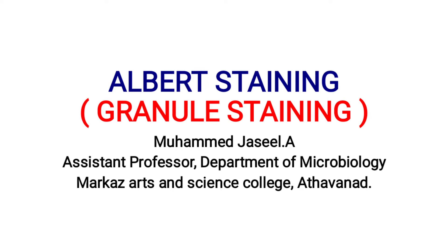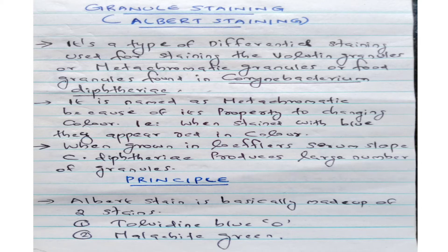I am Mohamad Jazeel, Assistant Professor, Department of Microbiology, Marcus Arts and Science College, Adhavanath. Granule staining or Albert staining is a type of differential staining used for staining the volutine granules or metachromatic granules or food granules found in Corynebacterium diphtheriae.